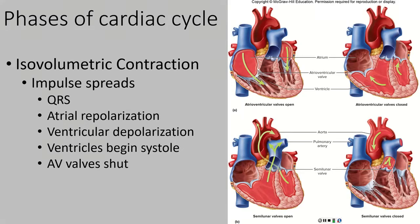Step two is called isovolumetric contraction. ISO means equal, volumetric means measurement of volume, so the whole word means the volume is not going to change during this part of the contraction. That impulse that spread across the atria continues to spread — we're going to get the QRS complex during this time. The atria repolarize, the ventricles depolarize, and systole begins — the ventricles start to contract.